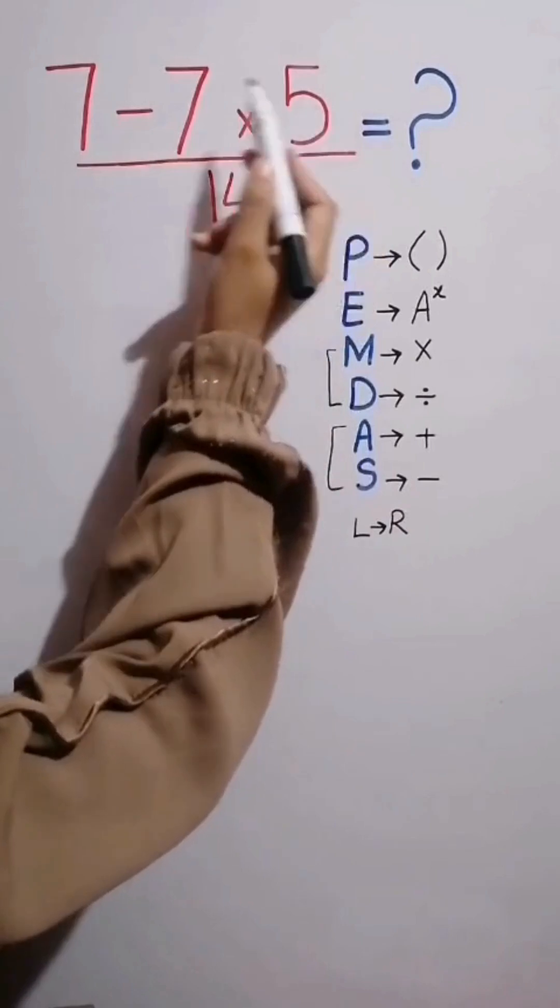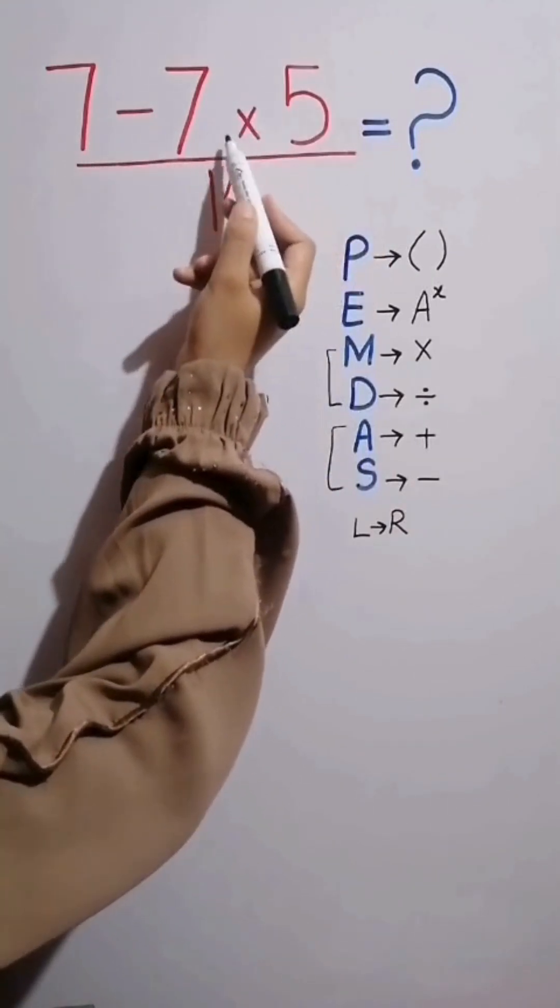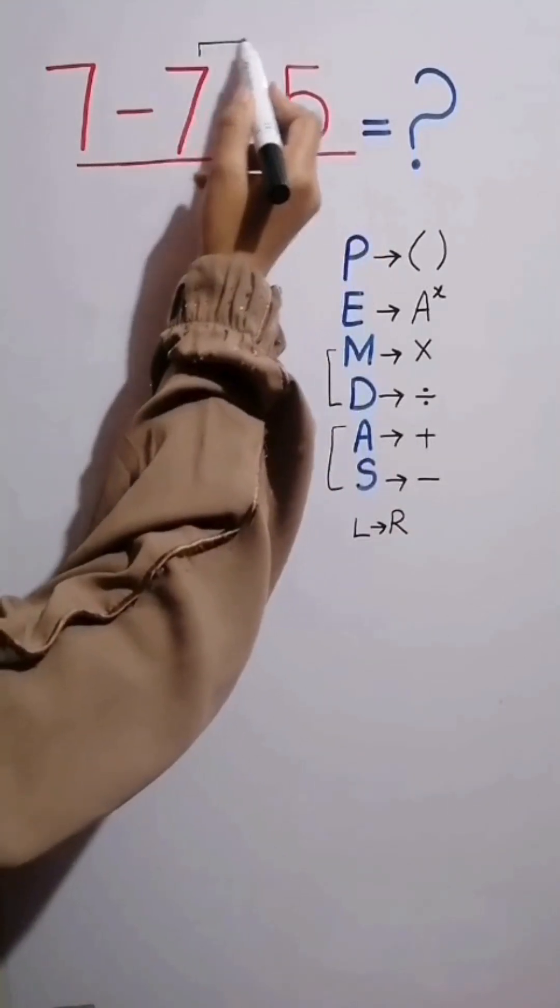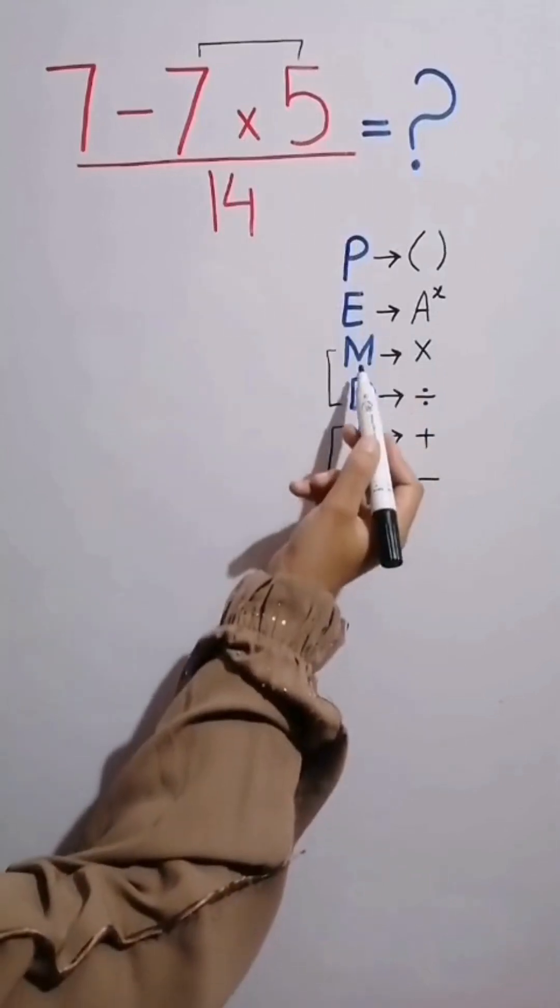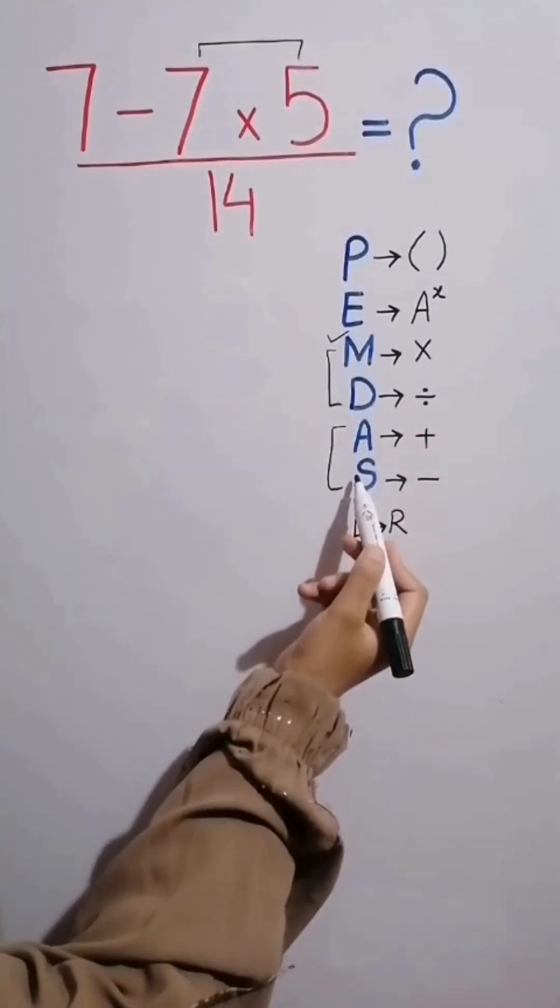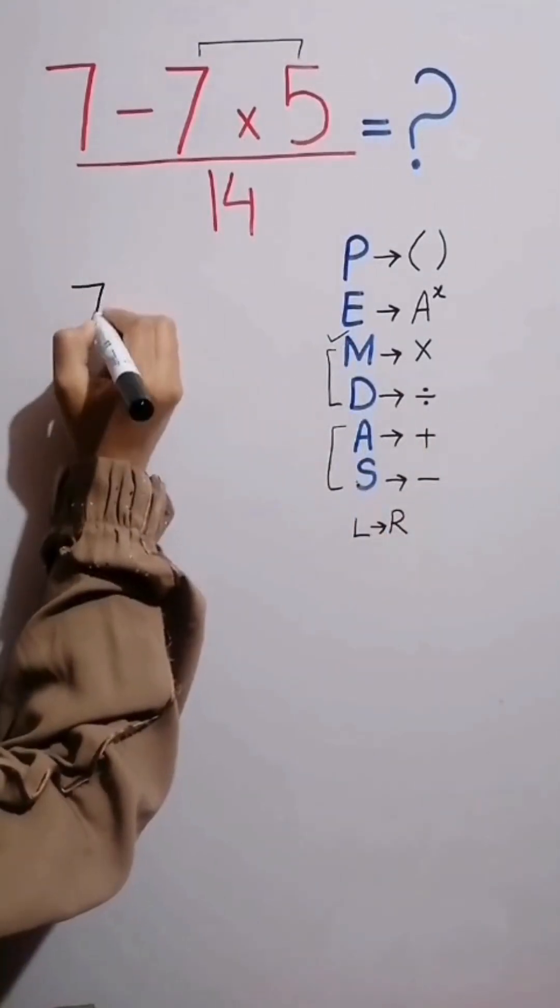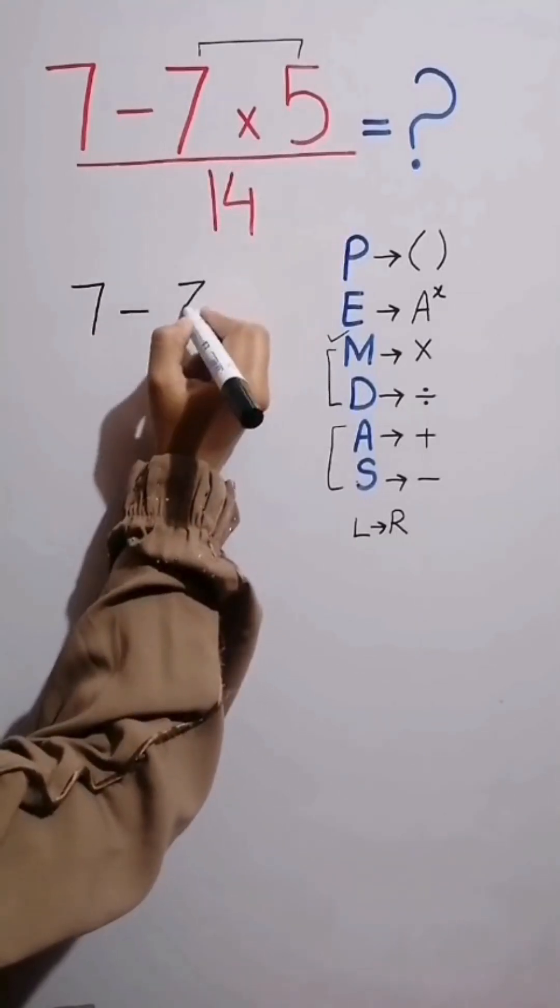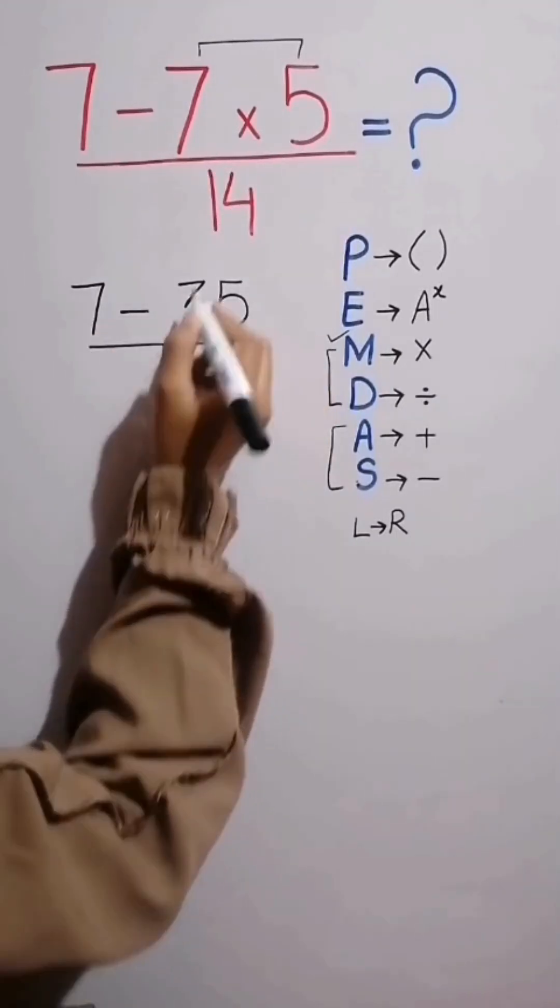In the numerator of the fraction, we have subtraction and multiplication. First, we simplify the multiplication because multiplication has higher priority than subtraction. In the expression 7 minus 7 times 5, first 7 times 5 equals 35. Then divided by 14.